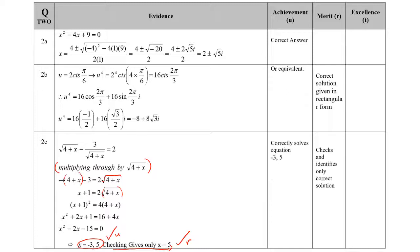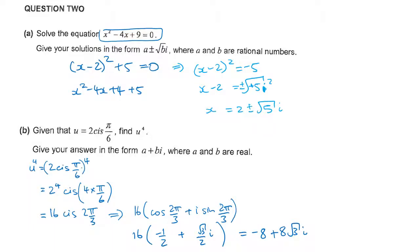They solved the earlier question using the quadratic formula as well, which is fine. For the u to the 4th question: getting the intermediate step in polar form gives your achieved tick, and expressing the final answer in rectangular form gives your solution. Polar form is achieved, rectangular form is merit.